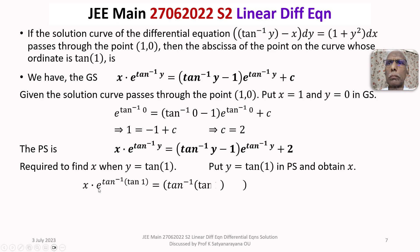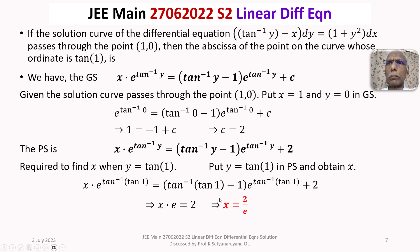Substituting y equals tan(1): x times e to the power tan inverse(tan 1) equals (tan inverse(tan 1) minus 1) times e to the power tan inverse(tan 1) plus 2. Since tan inverse(tan 1) equals 1, this becomes x times e equals (1 minus 1) times e plus 2, which is 0 plus 2 equals 2. Therefore x times e equals 2, so x equals 2/e.